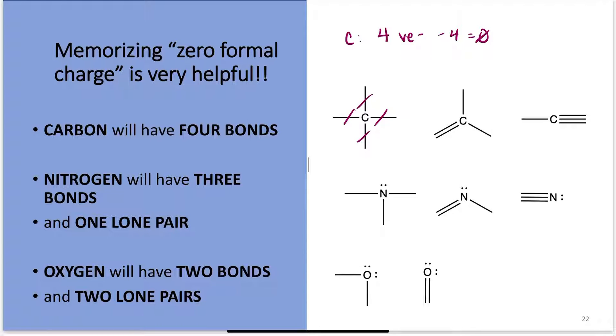Nitrogen, with 3 bonds and 1 lone pair, has a formal charge of 0. Nitrogen has 5 valence electrons, 1, 2, 3, minus the 2 lone pairs, gives me 0.